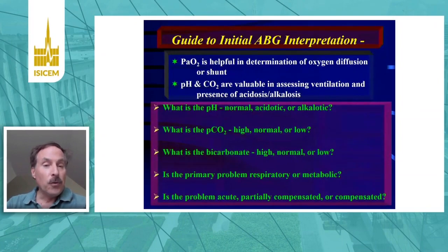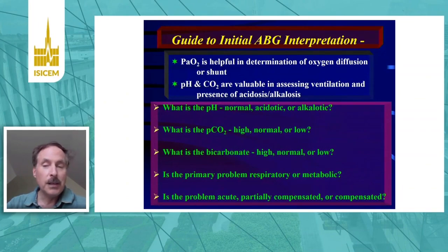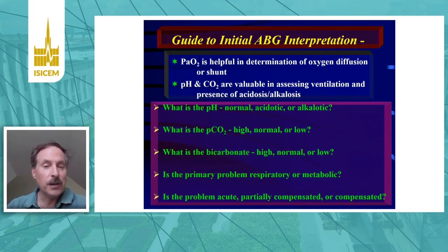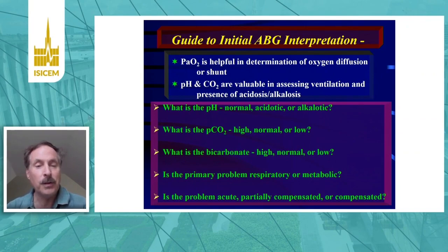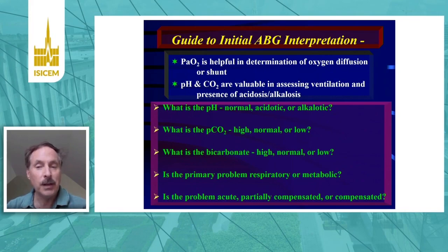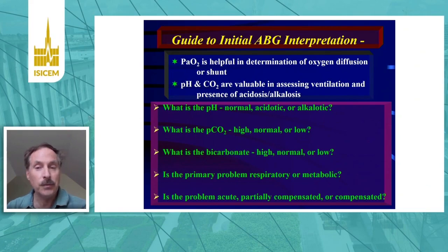The PaO2 is an important value in our blood gas, but keeping in mind that oxygen saturation is a standard of care in the ICU, we evaluate PaO2 more in the consideration of how the lungs are functioning in terms of whether there is a shunt or a diffusion abnormality — i.e., an A-a gradient present. The pH and CO2 are highly valuable in assessing the ventilation itself and the presence of any respiratory acidosis or alkalosis.